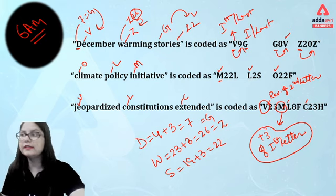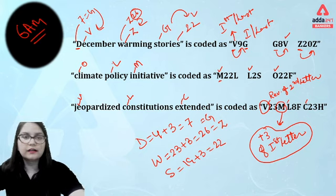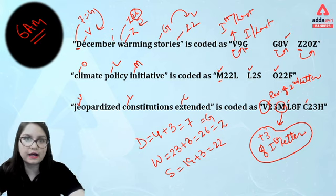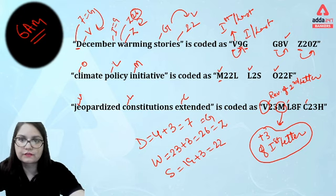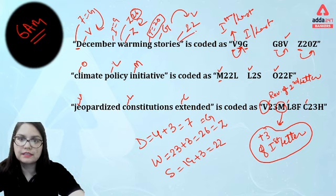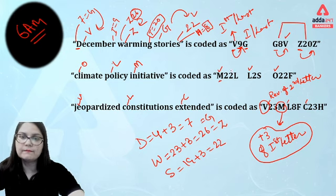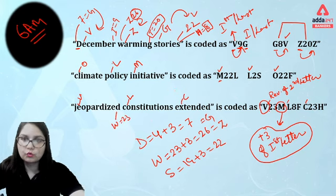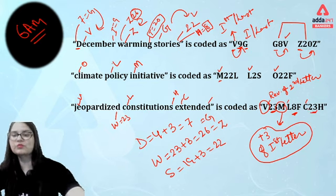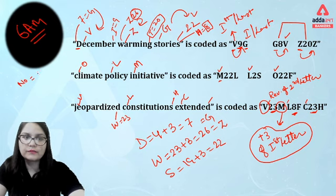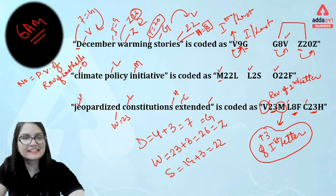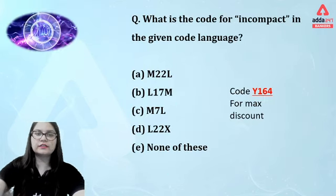Now let's observe the number. The place value of R is 18, and the reverse place value would be 9 — yes, we are having 9. G's reverse: T has place value 20. S has place value 19, its reverse is H, and the place value of H is 8 — yes, we are having 8. W has place value 23; the reverse gives place value 8 — yes, confirmed. So the pattern is identified: the number comes from the reverse place value of the last letter.